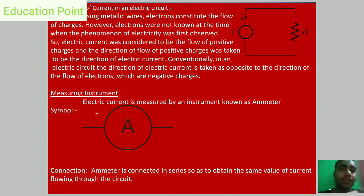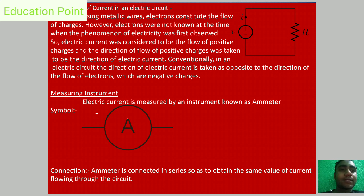The direction of electric current in a circuit made from metallic wires: electrons constitute the flow of charges, but when electricity was discovered, electrons were not known. Only positive charges were known at that time. That is why the direction of electric current is taken from the positive terminal of the battery to the negative terminal — conventional current direction.